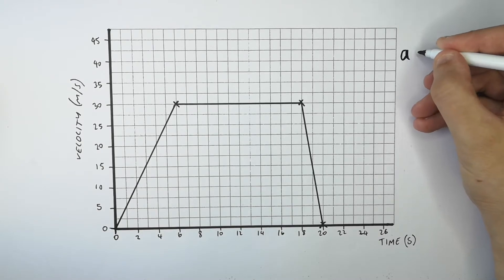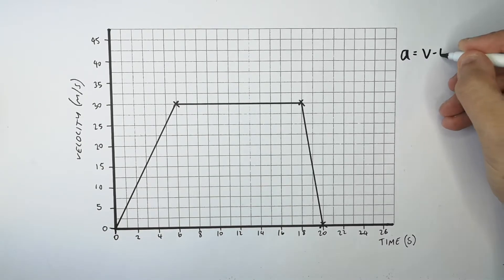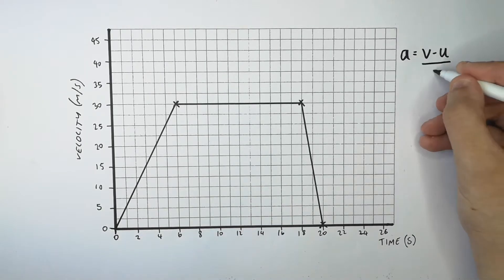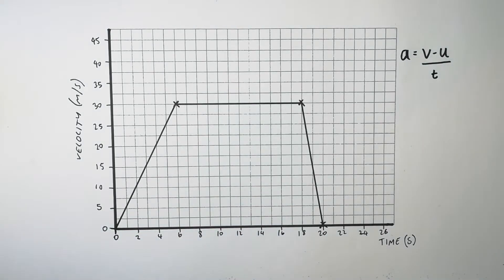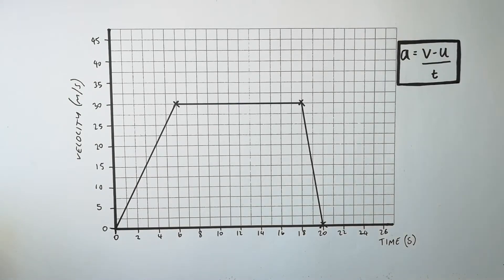We can use the equation a equals v minus u over t to use the information on this graph to calculate the acceleration of this object at each stage of its journey.